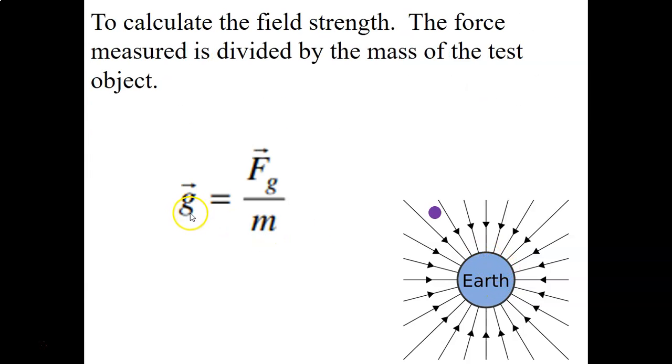So this is the equation that's in your equation sheet, which basically says the gravitational field strength is equal to the force of gravity acting on that object divided by the mass of the object, and where the mass of the object is the test object. We would not be dividing out the mass of the Earth. That would be not what we're doing. So this is the mass of the test object.